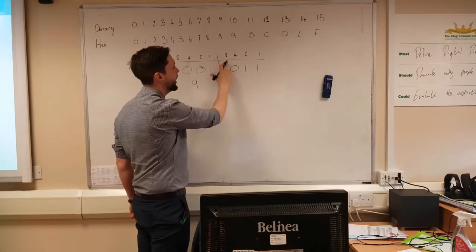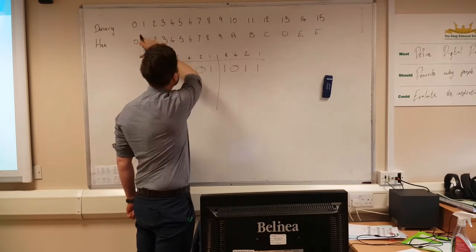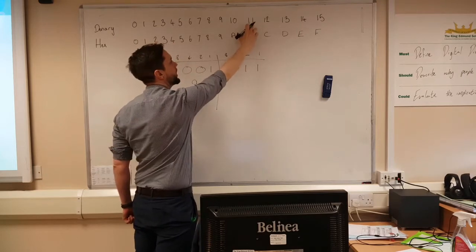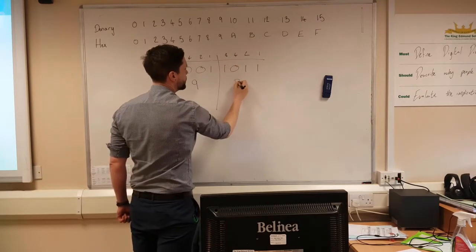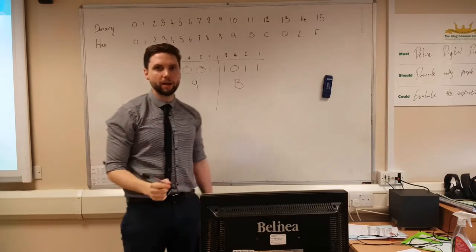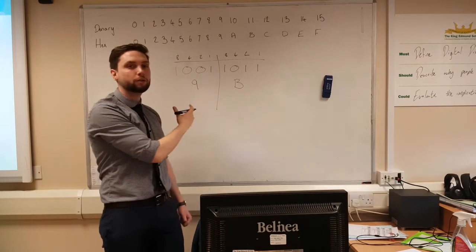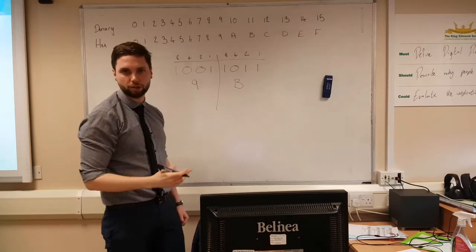And then the second value here, eight, nine, ten, eleven. Well, eleven, if we check on the hex here, eleven is B. So this value would be nine B. And that is how you do any binary into hex.